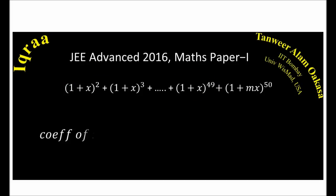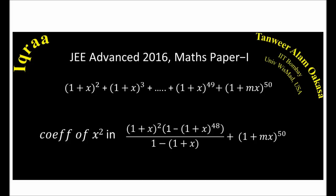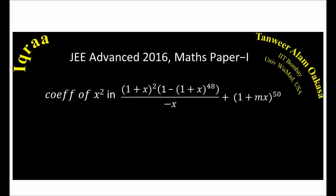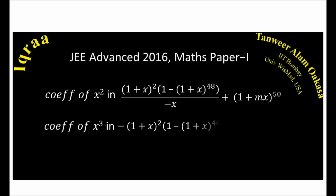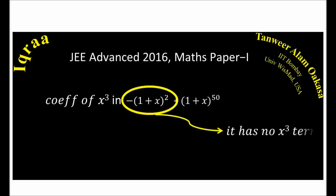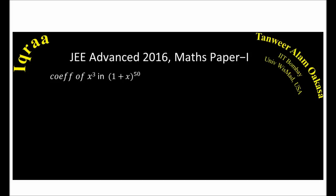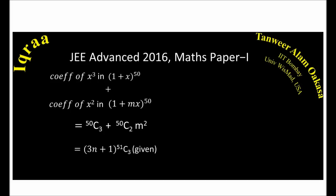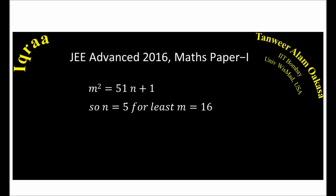Applying the GP formula, we get (1+x)² × (1 − (1+x)⁴⁸) / (1 − (1+x)). We find the coefficient of x² in the first 48 terms and the last (1+mx)⁵⁰ term. Since (1+x)² has no x³ term, we need the coefficient of x³ in (1+x)⁵⁰ and coefficient of x² in (1+mx)⁵⁰, which equals 50C3 + 50C2·m² = (3n+1)·51C3. Solving gives m² = 51n + 1, and by trial and error, for the least integer m = 16, we get n = 5.